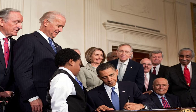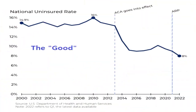First of all, let's take a look at the good. The good part of it is that the national uninsured rate is at a pretty close to an all-time low. So one thing it has done is gotten more people on insurance. That's probably the good part of it, with a few other things as well.